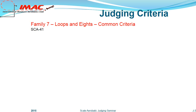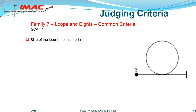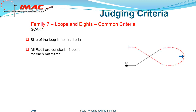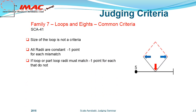Let's look at some general criteria that apply to all Family 7 figures. The size of the loop, large or small, as chosen by the pilot, is not a judging criteria. The radii of all loops, partial or whole, must be constant. When a radius change is observed, a one-point deduction is applied. In figures where loop size or radii are required to be the same and they are not, a one-point deduction per mismatch is applied.